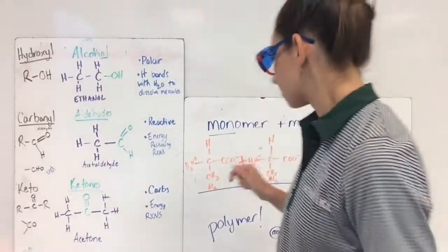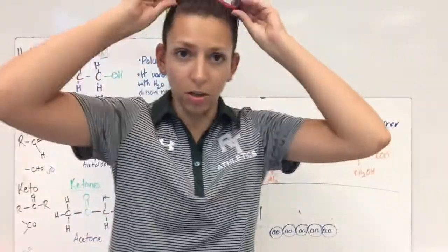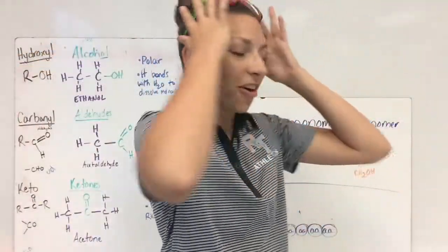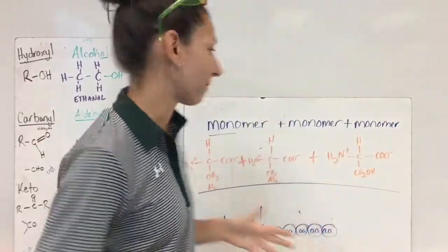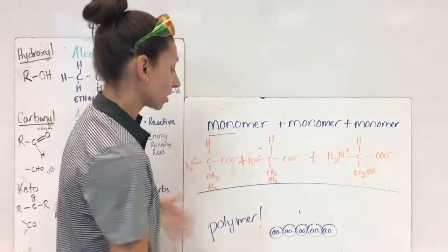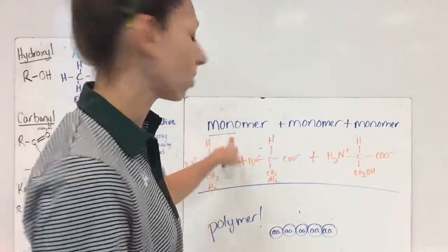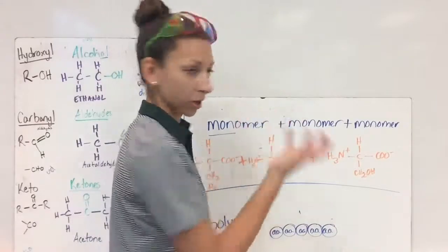All right, so functional groups, before we get into those, let's talk a little bit about molecules. Now, we know in biology we're going to talk a lot about monomers and polymers. So mono meaning one, our prefix meaning one, mer is just a unit.